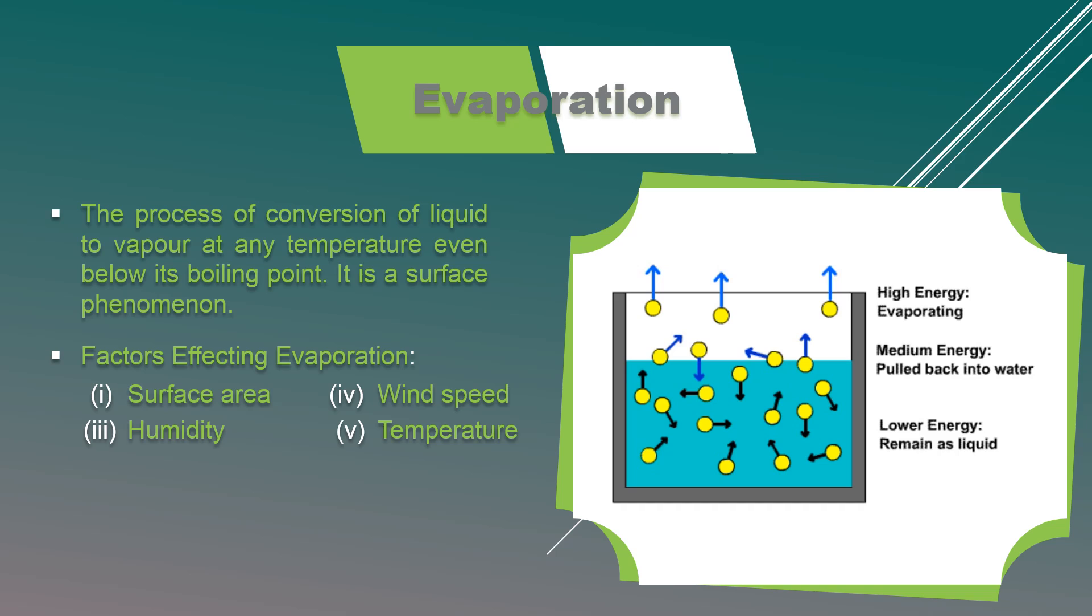Third factor is humidity. More is humidity, less is the evaporation. For example, clothes dry with difficulty on humid days. The reason is that when humidity is more, there is more vapor in the atmosphere, due to which the escaping tendency of vapor decreases, so the rate of evaporation also decreases.